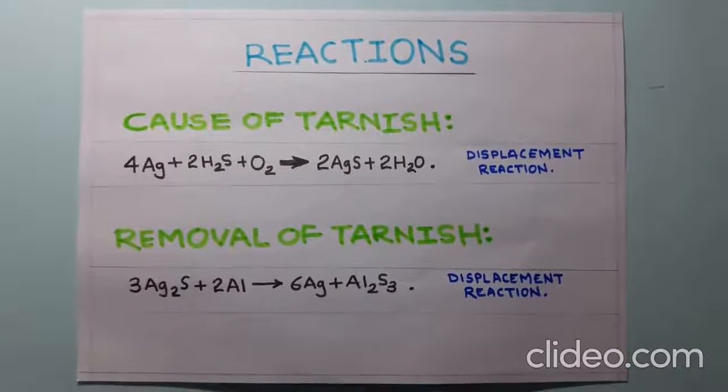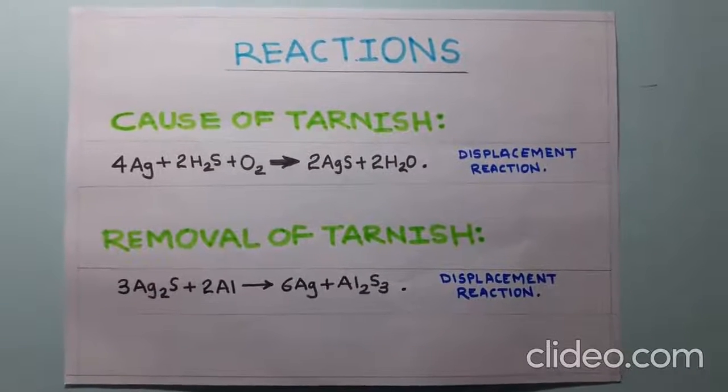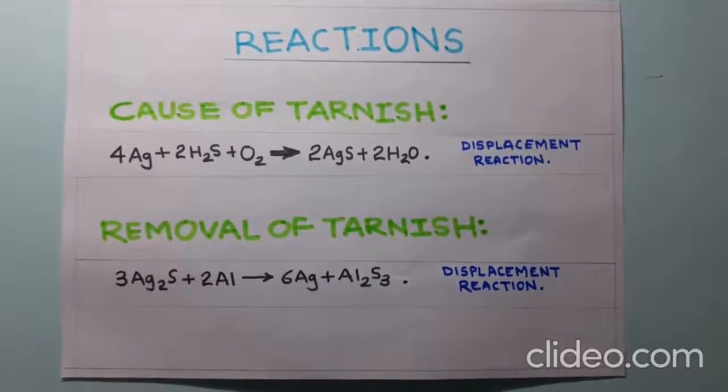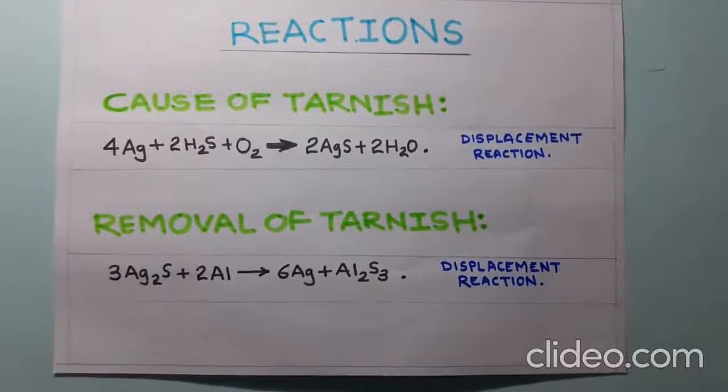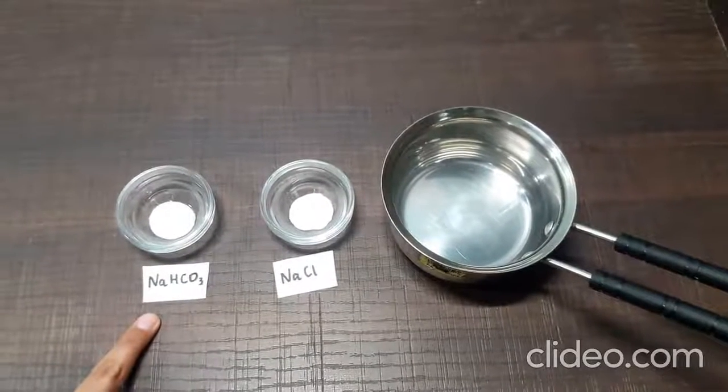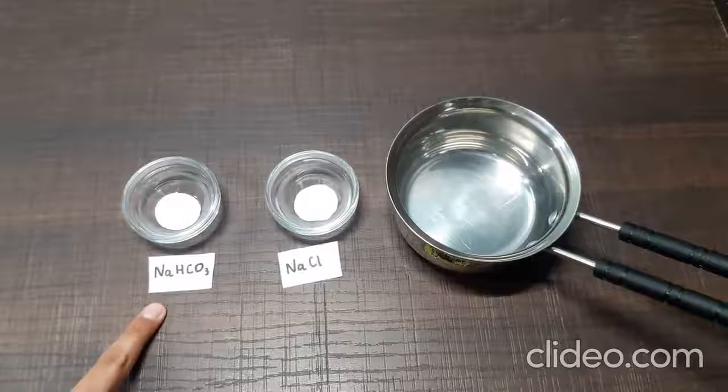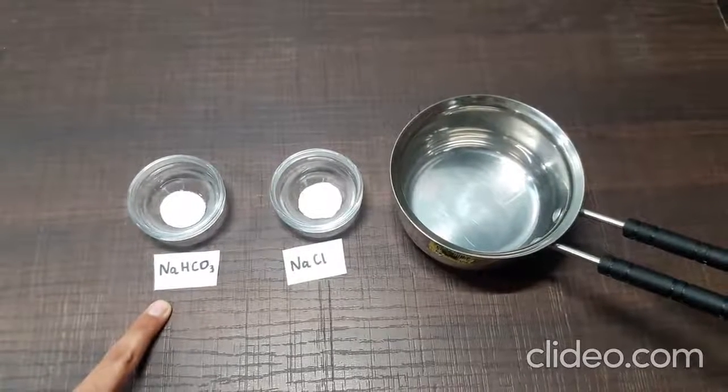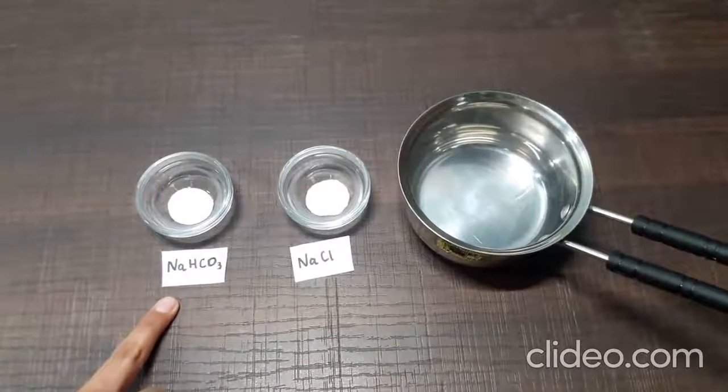Removal of tarnish: Aluminum from the foil reacts with the tarnish to displace silver metal and give aluminum sulfide. The sodium bicarbonate used in the reaction removes the aluminum hydroxide layer present on the foil, allowing it to react with the silver sulfide.